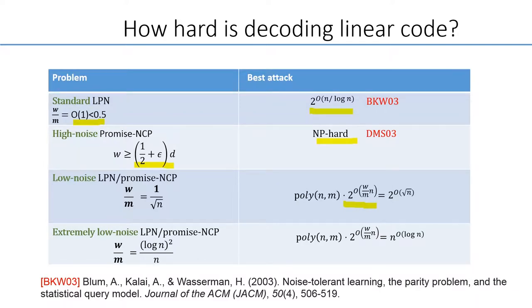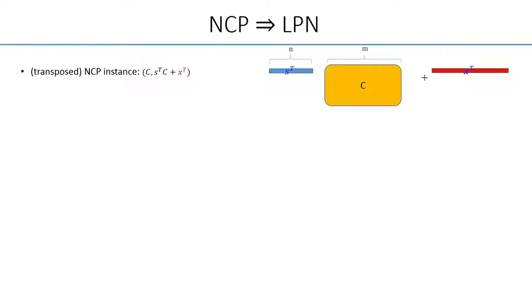Let's take a look at the reduction from NCP to LPN. Suppose we have a NCP instance, and for our convenience, suppose it's in the transposed form, where this S-transposed and X-transposed denote a rho vector.